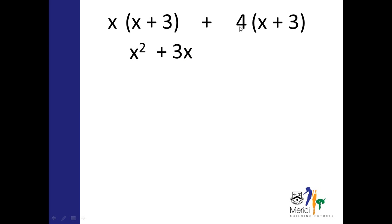And then we'd move over to this part and you'd get 4x, 4 times x, and then finally 4 times 3, which is 12. Now hopefully then you would see that there are some like terms here so we can simplify this a bit further. Then we get x squared plus 7x plus 12.